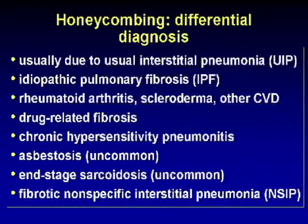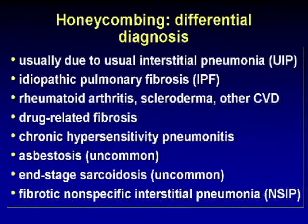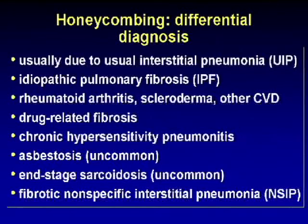If you see honeycombing on high-resolution CT, the differential diagnosis is essentially that of UIP. The common causes are idiopathic pulmonary fibrosis, rheumatoid arthritis, scleroderma and other collagen diseases (rheumatoid and scleroderma being most common), drug-related fibrosis, chronic hypersensitivity pneumonitis, asbestosis, end-stage sarcoid (which uncommonly results in honeycombing), and fibrotic nonspecific interstitial pneumonia.